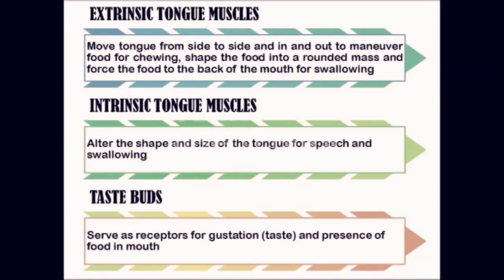Now let me explain the function of the tongue. The tongue is an accessory digestive organ composed of skeletal muscle covered with mucous membrane. First, extrinsic tongue muscles function to move the tongue from side to side and in and out to maneuver food for chewing, shape the food into a rounded mass, and force the food to the back of the mouth for swallowing. The second is intrinsic tongue muscle structure, which alters the shape and size of the tongue for speech and swallowing.